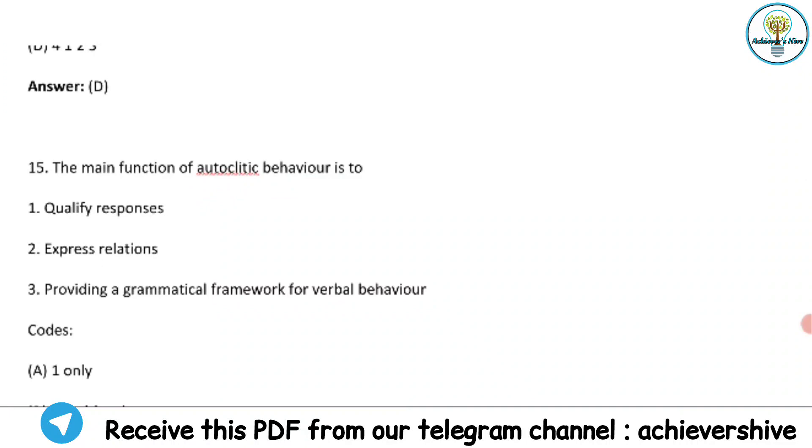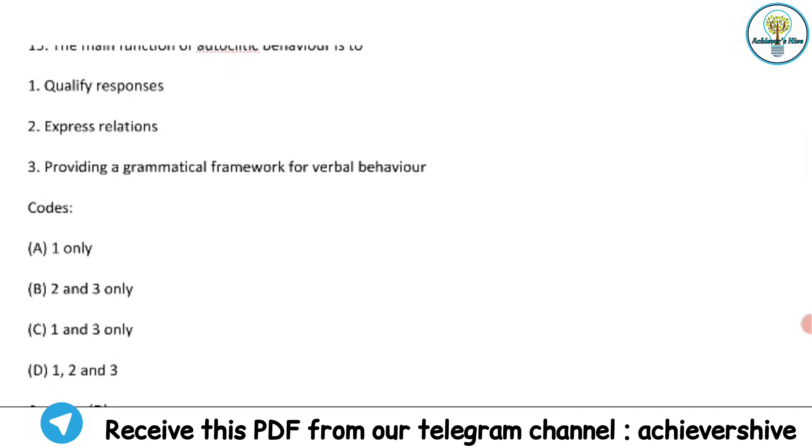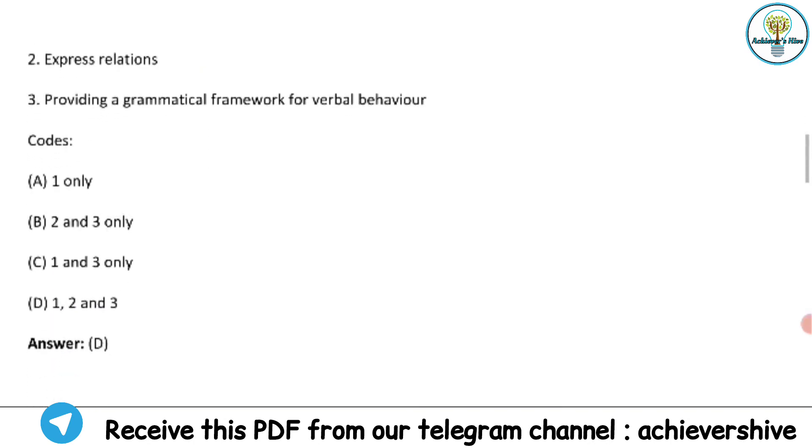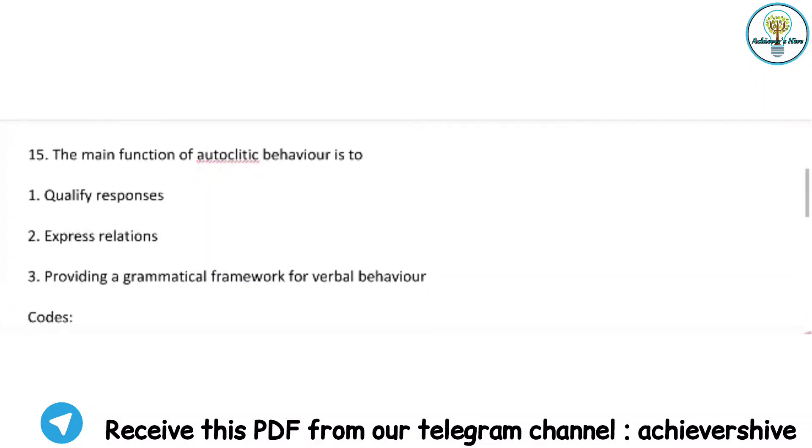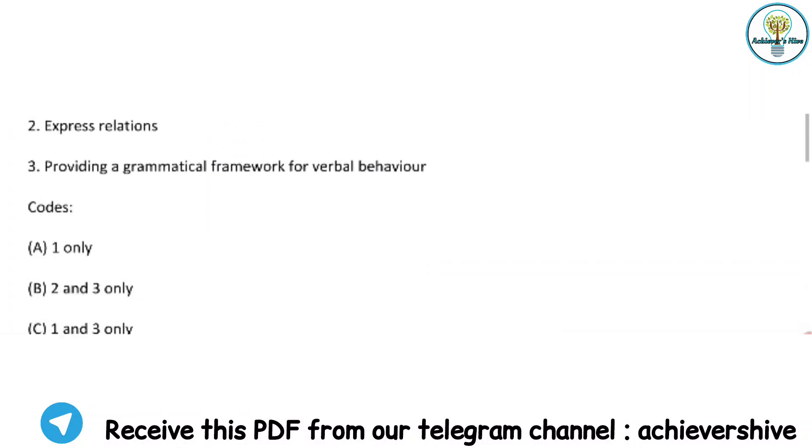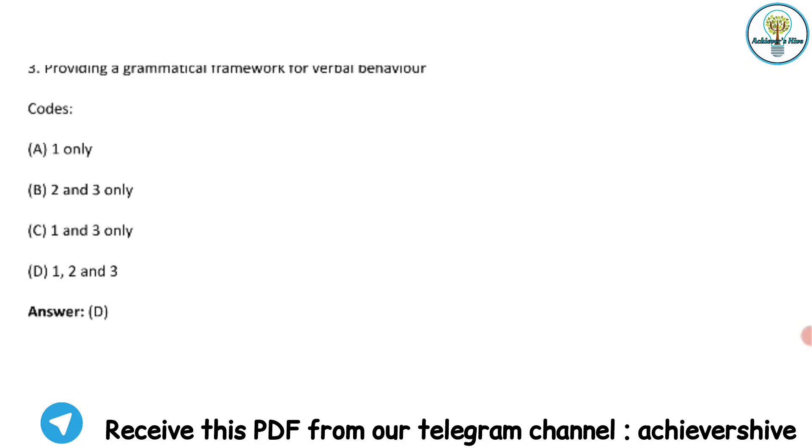Moving on to the next question. Autoclitic behavior is to which one? Qualify responses, express relations, provide a grammatical framework for verbal behavior. We are given four codes and we see that one, two, three - all three are correct in case of autoclitic behavior. So option D is the correct one.